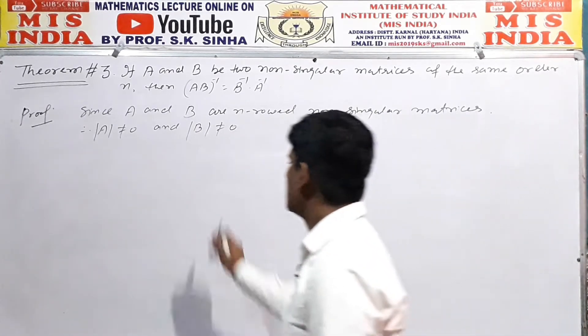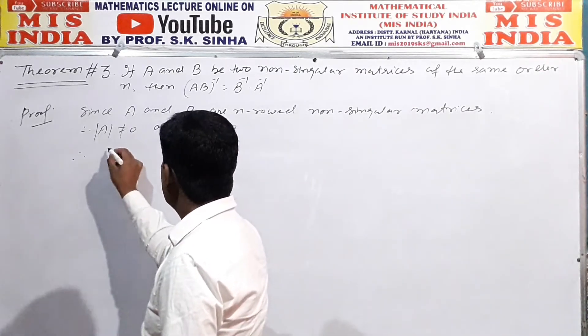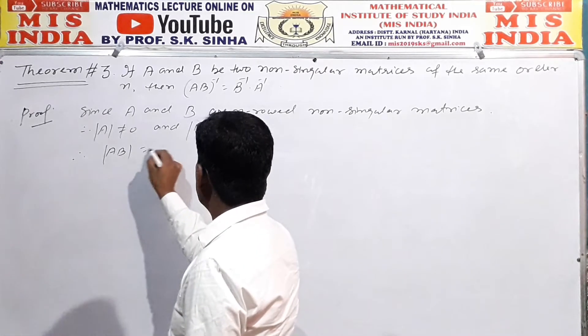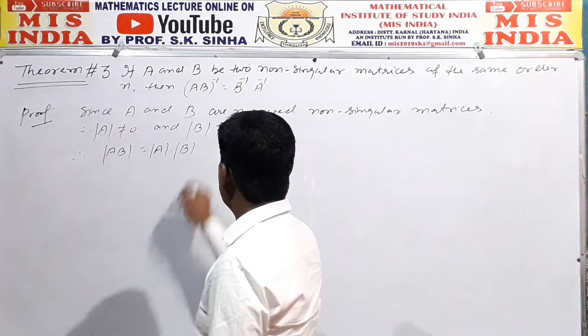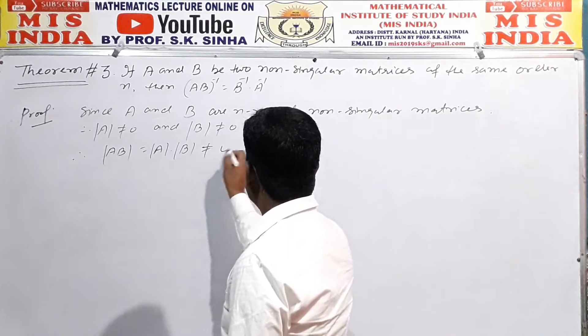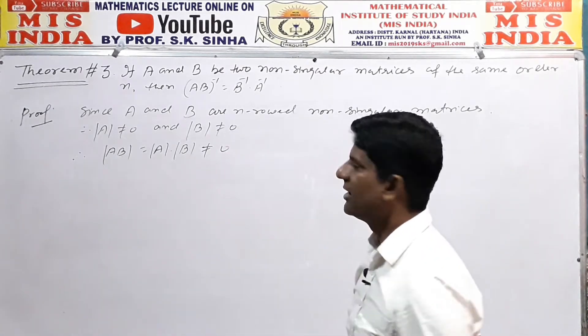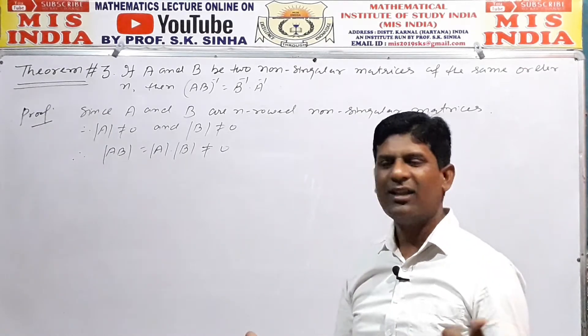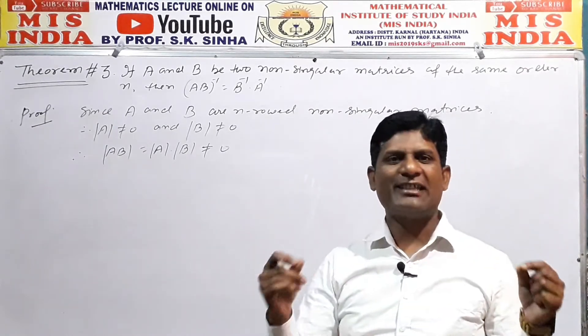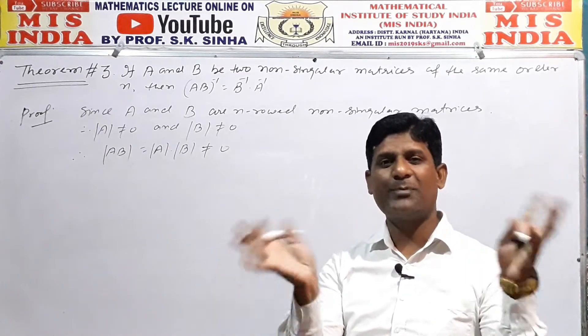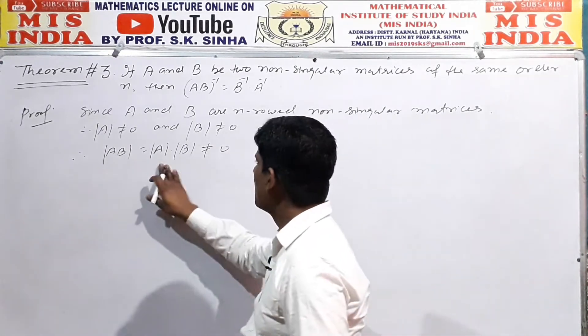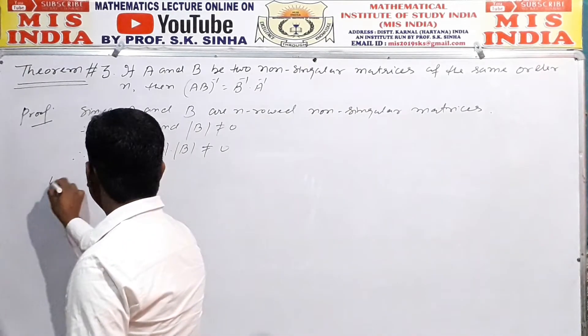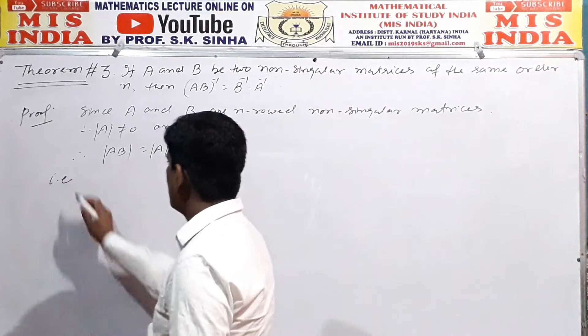Therefore, their product of each other, A and B, determinant of matrix A into B is also not equal to 0. So it means determinant of matrix A is not equal to 0, and B is also not equal to 0, and their product AB determinant is also not equal to 0. That is, AB is non-singular and hence is invertible.